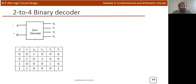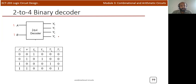For input 1 0 (A=1, B=0), Y2 will be 1 and all other values will be 0. For the last possibility, input 1 1 equals decimal 3, so Y3 will be 1 and all other values will be 0. This is the truth table for a 2-to-4 decoder.